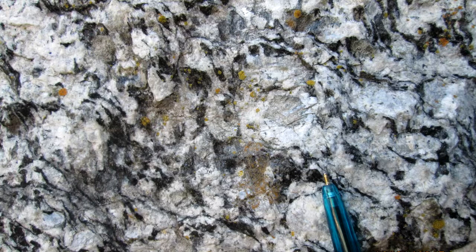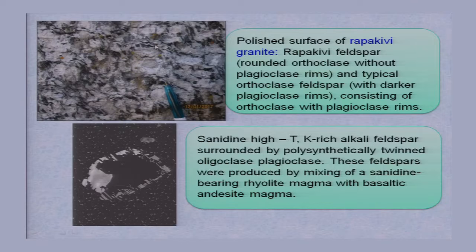And typical orthoclase feldspar with darker plagioclase rims. Some of the orthoclase crystals have darker plagioclase rims — these are the darker plagioclase rims here. As a result, you get the formation of Rapakivi texture.